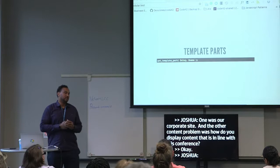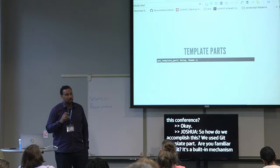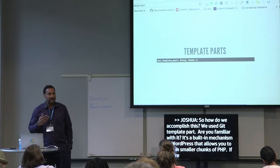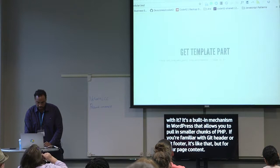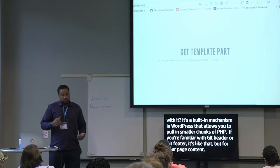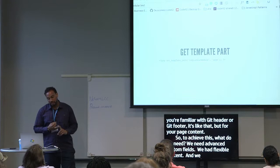How do we accomplish this? We use get_template_part — a built-in mechanism in WordPress that allows you to pull in smaller chunks of PHP. If you're familiar with get_header or get_footer, it's kind of that, but for your page content. To achieve this, what do we need? We need Advanced Custom Fields, we need flexible content, and we need this thing called a module loop — and it's very easy to achieve.